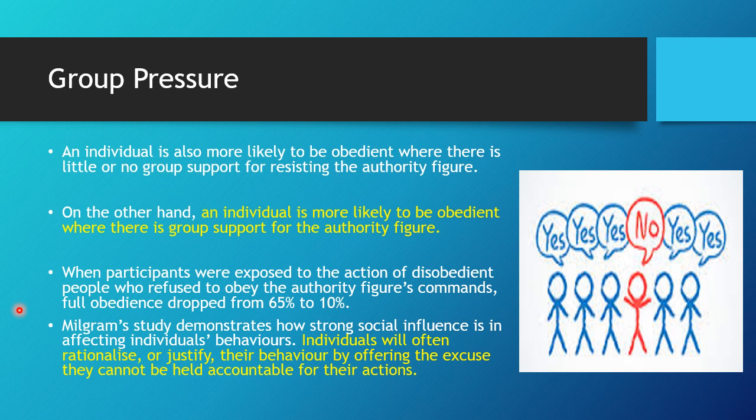Milgram's study demonstrates how strong social influence is in affecting individuals' behaviours. Individuals will often rationalise or justify their behaviour by offering the excuse that they cannot be held accountable for their actions. The Nazis did this as well — people would engage in very bad behaviour towards Jewish people because everybody else was doing it, saying 'I didn't really believe the Jews were bad, but everybody else did it, so I believed I should too.'